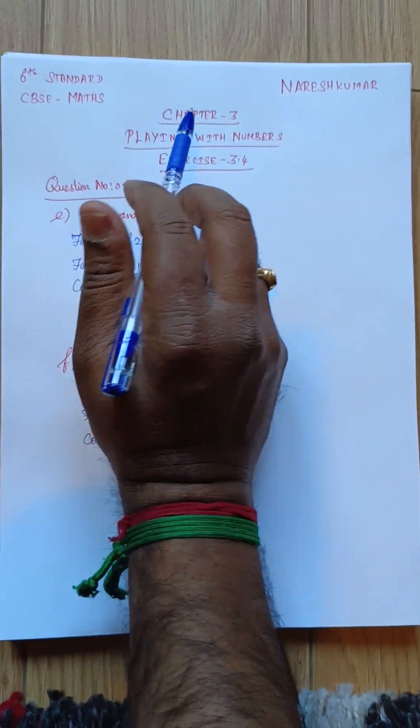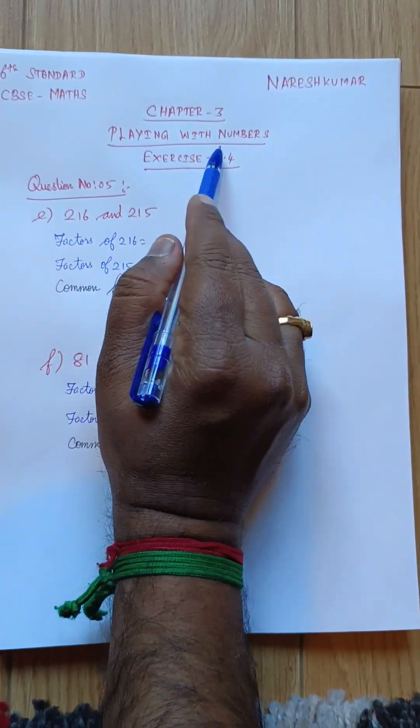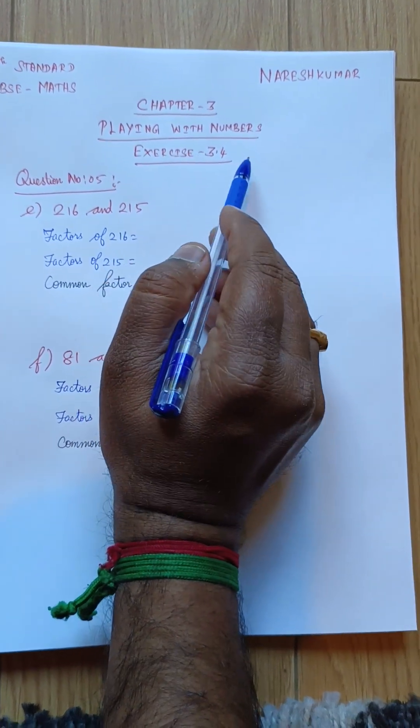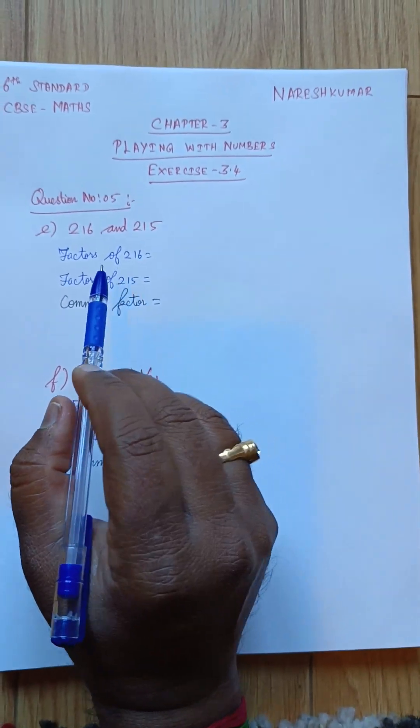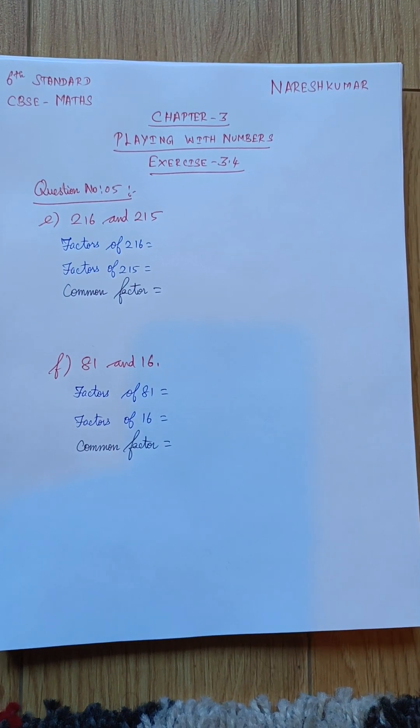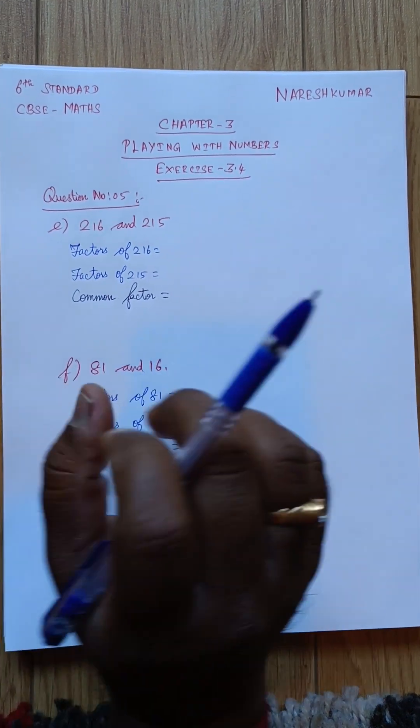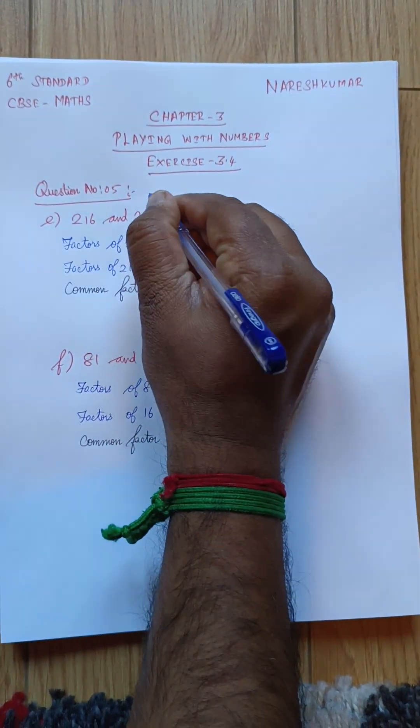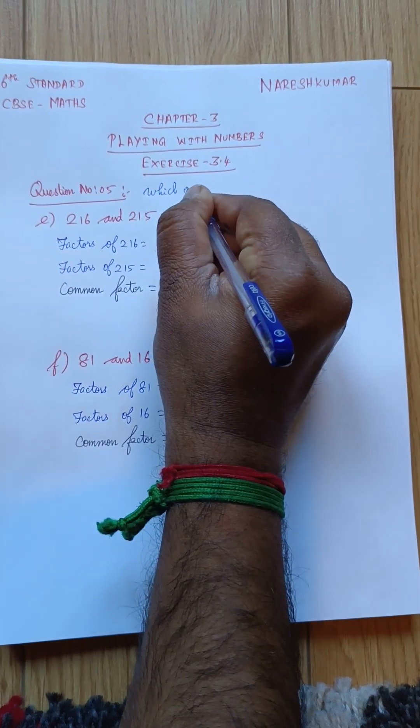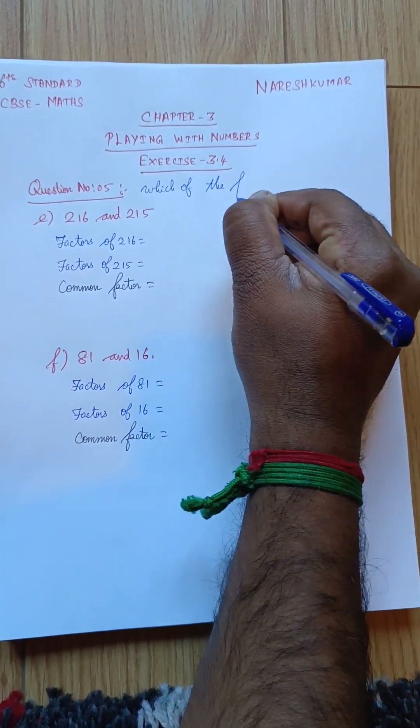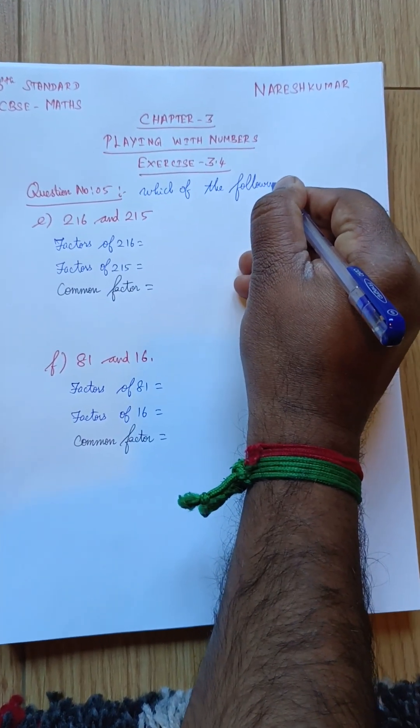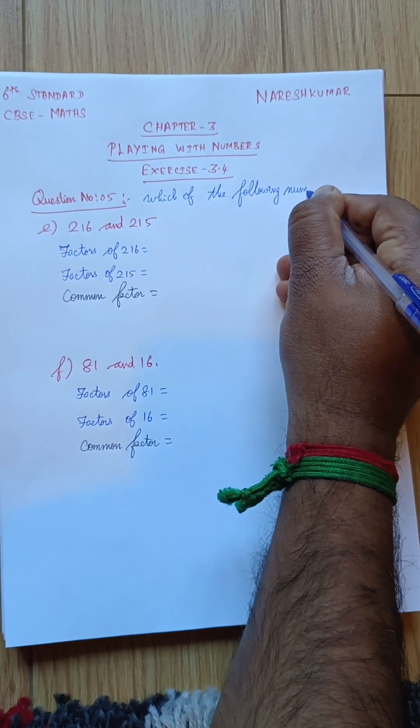Sixth Standard, CBSE Maths, Chapter Number 3, Playing with Numbers, Exercise 3.4. The question is, write the following numbers which are co-prime, i.e., which of the following numbers are co-prime?